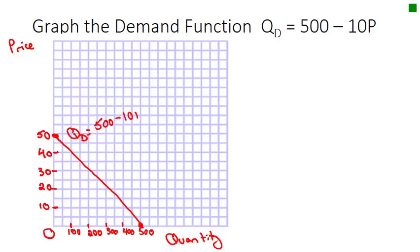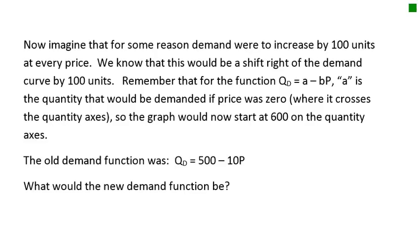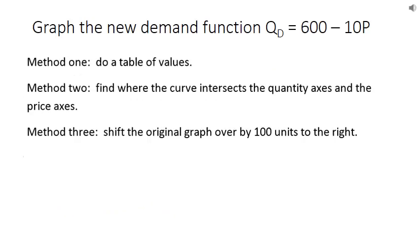If the demand curve were to increase by 100 units at every price, we know this would be a rightward shift of the demand curve by 100 units. For the function QD = a - bp, a is the quantity demanded if price is zero. Initially it crossed the x-axis at 500, but now it crosses at 600. So the new function is QD = 600 - 10p. The value of a has increased by 100.